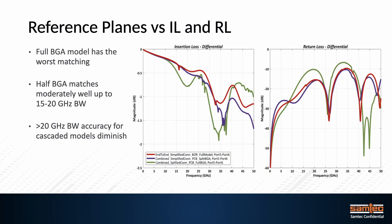Looking at insertion loss and return loss, a full BGA ball has worse matching because of the single current coming from the BGA balls through the anti-pad edge on layer one. The half BGA ball configuration matches moderately well up to 20 GHz. As we go to higher frequencies, the accuracy diminishes between cascaded models.